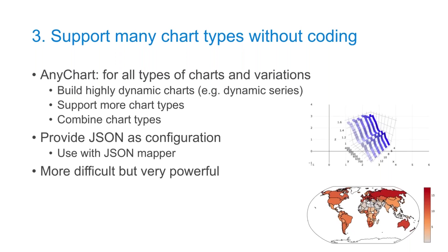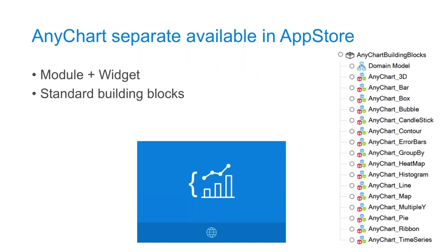Note that Any Chart is available as a separate module in the App Store — it's not part of Atlas UI because it's more of an advanced feature. The module plus widget in the App Store also contains building blocks with examples of charts you can use, complete with example data. You select your data, put it into a JSON structure, create a mapping, and fill that data — just as you would with a REST service.